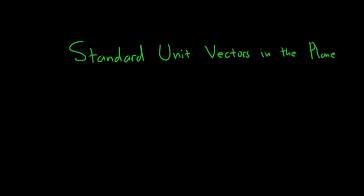The first standard unit vector is i-hat — it's an i with a hat on it, or you can write it with a little arrow. I usually use i-hat. It's the vector whose first component is 1 and second component is 0. The other standard unit vector for the plane is j-hat, and this vector is <0, 1>.